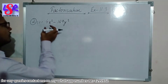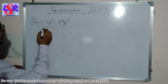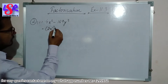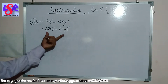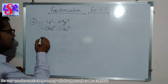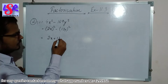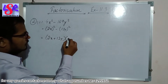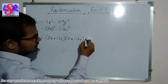Here we are having 4x²-169y², which can be written as (2x)²-(13y)². This is in the form of a²-b²=(a+b)(a-b), so this can be written as (2x+13y)(2x-13y) as the answer.